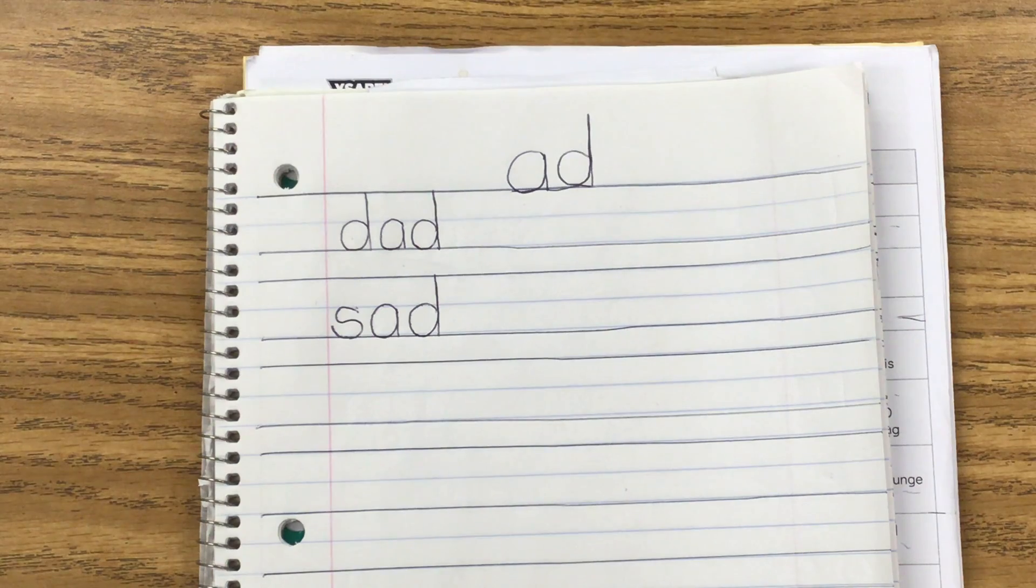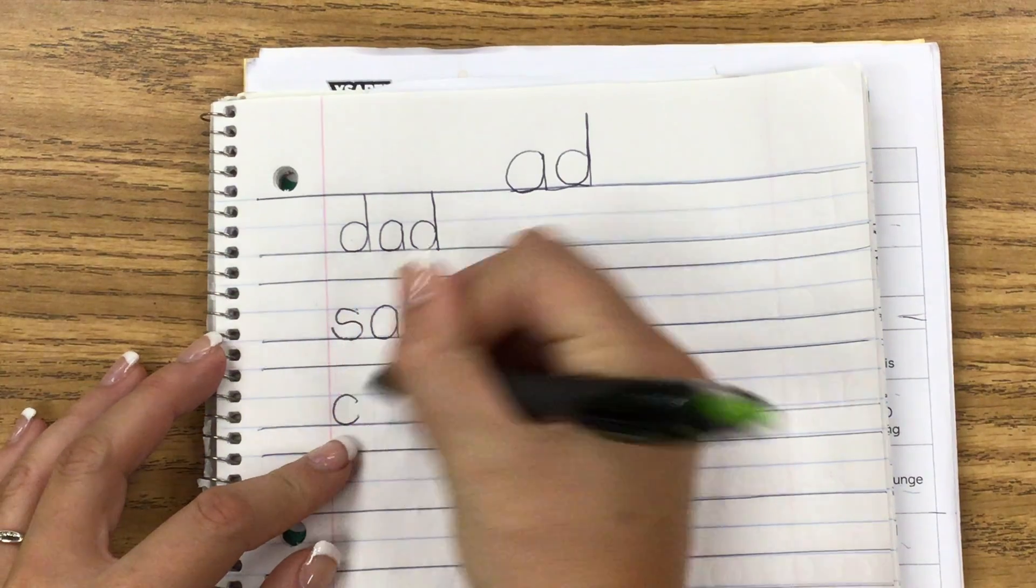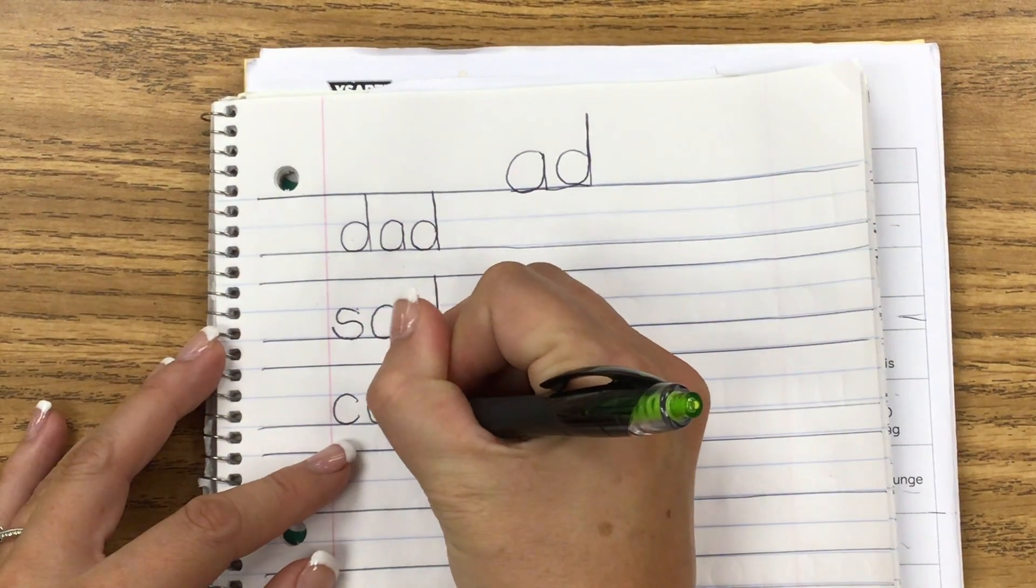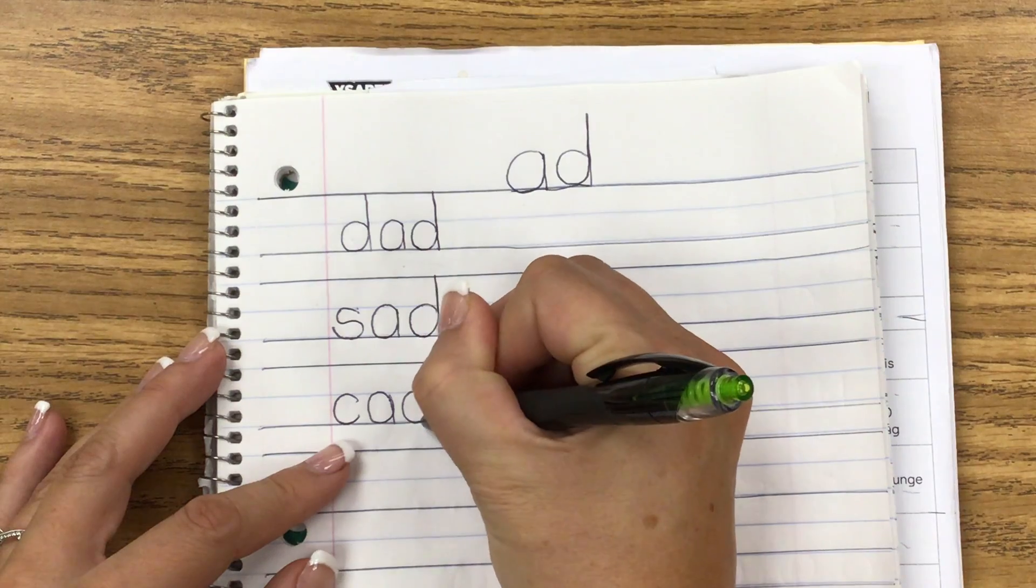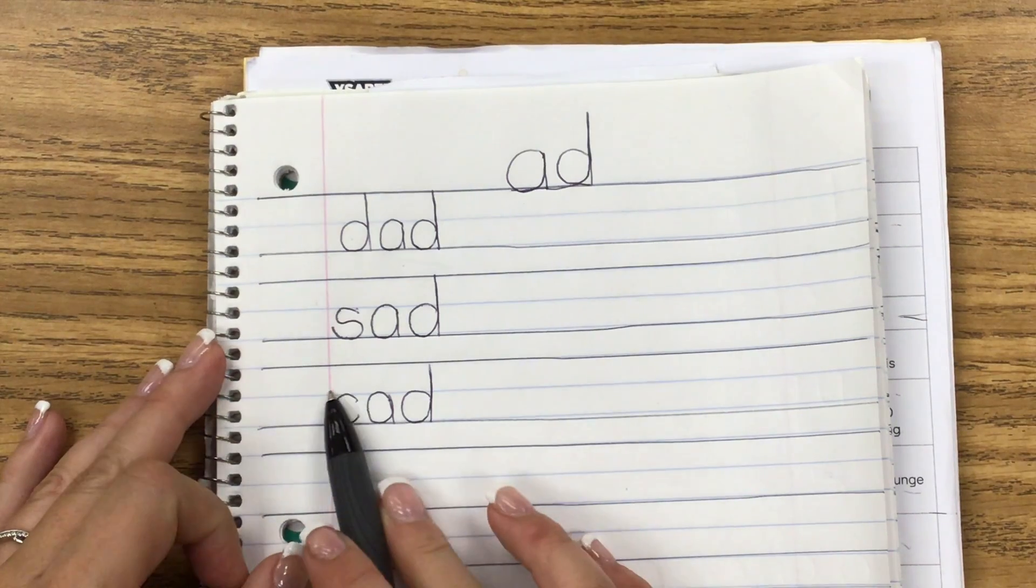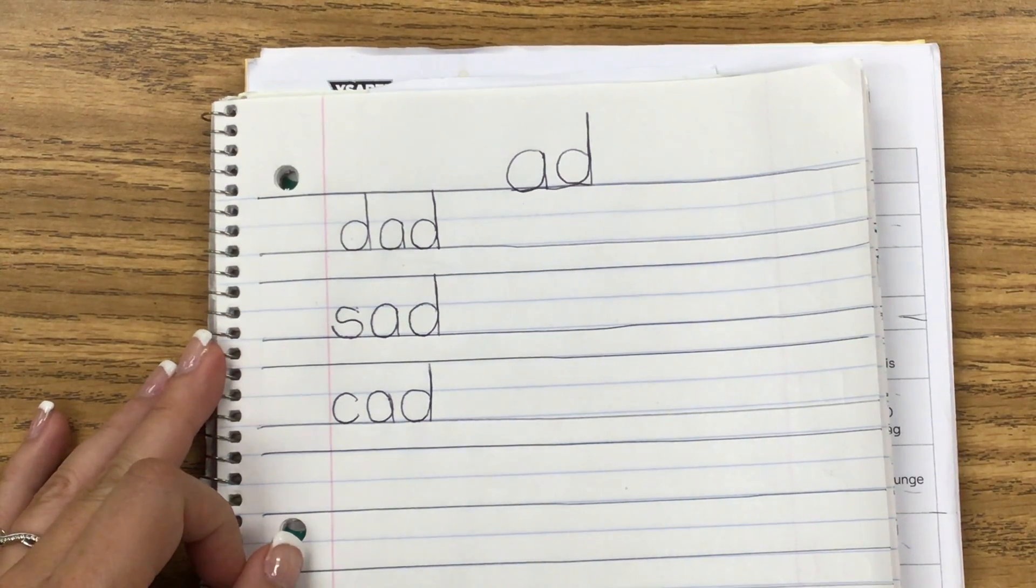Let's change that beginning sound. Sometimes these are called nonsense words. They're not really a word, but we can still sound them out. So, I'm going to put a C here. Remember, we start at 2 o'clock around the clock. And so, instead of SAD, we have C-AD. Get your motor running. C-AD. Not really a word, but we can still sound it out because we know our phonics.